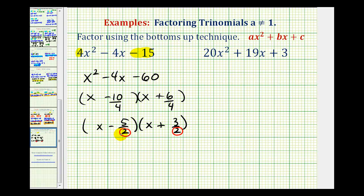So the correct factoring of the given trinomial would be two x minus five times two x plus three.